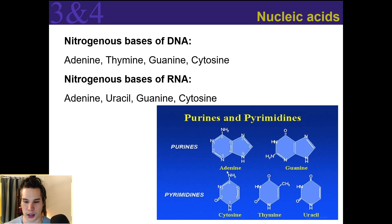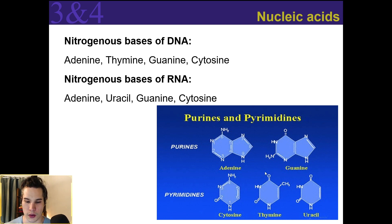Adenine is going to bind to thymine in DNA. If we're dealing with RNA, adenine would bind instead to uracil. And then in both DNA and RNA, guanine is going to bind to cytosine, and cytosine binds to guanine.